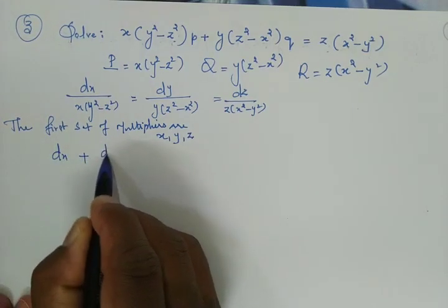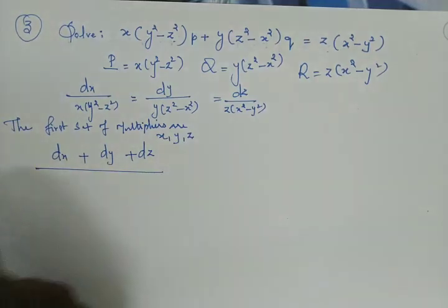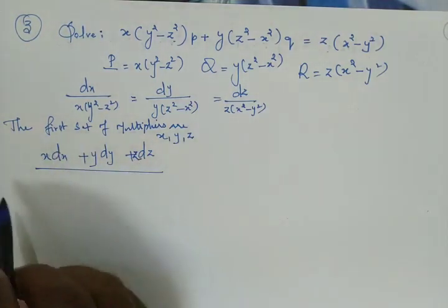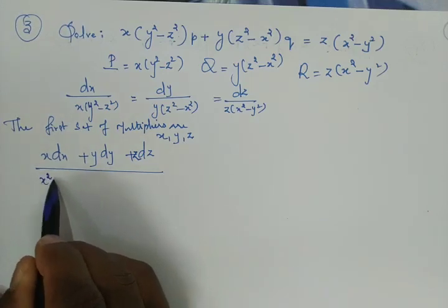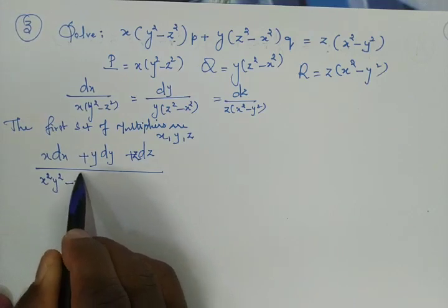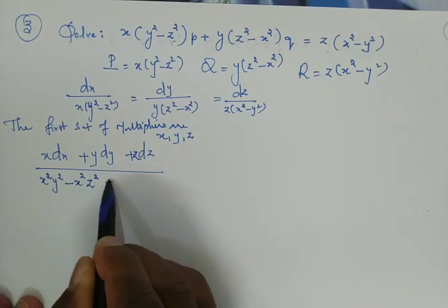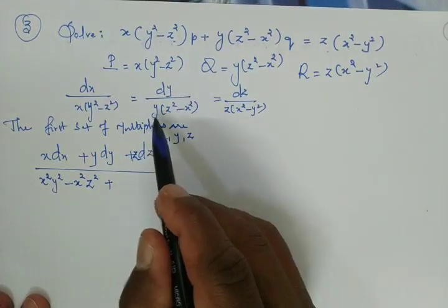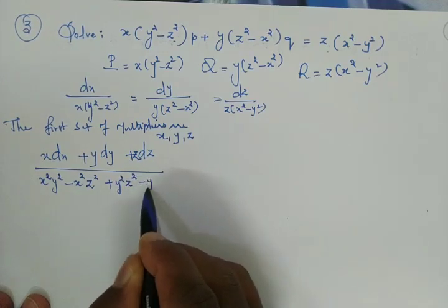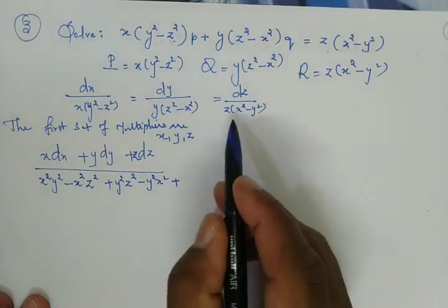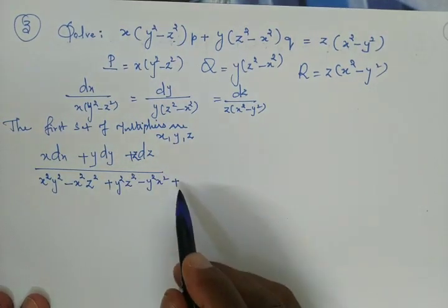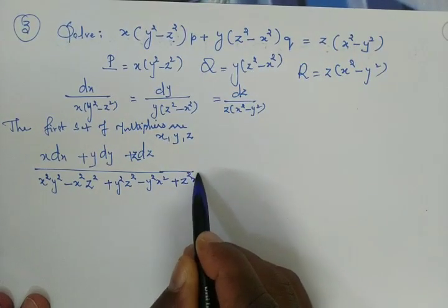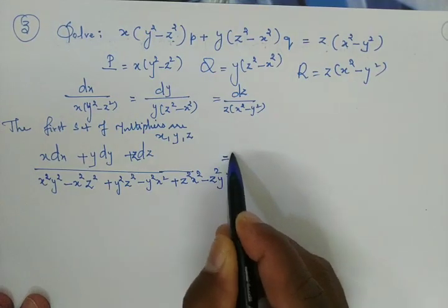Multiplying numerator and denominator: dx + dy + dz divided by x·x(y² - z²) + y·y(z² - x²) + z·z(x² - y²). This gives x²y² - x²z² + y²z² - y²x² + z²x² - z²y² in the denominator. The terms cancel pairwise, making the denominator zero.